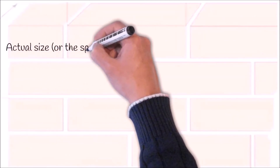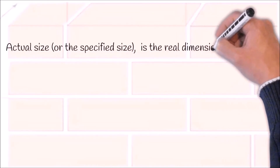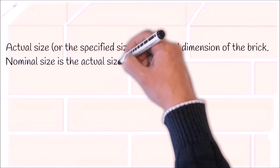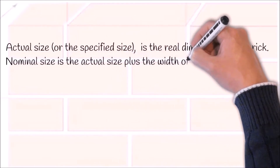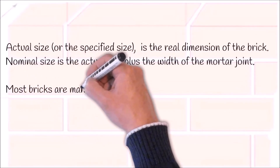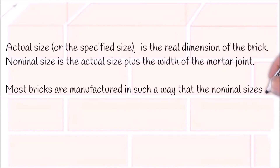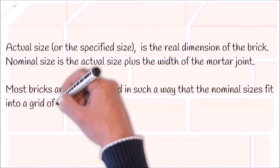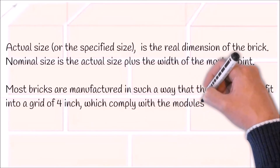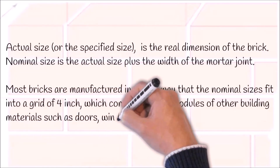Actual size, or the specified size, is the real dimension of the brick. Nominal size is the actual size plus the width of the mortar joint. Most bricks are manufactured in such a way that the nominal sizes fit into a grid of 4 inches, which complies with the modules of other building materials such as doors, windows, and wood components.